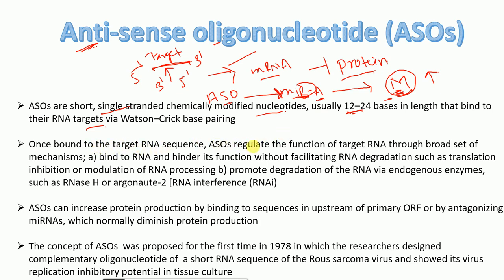Once bound to the target RNA sequence, antisense oligonucleotides regulate the function of the target RNA through a broad set of mechanisms: they can bind to RNA and hinder its function without facilitating RNA degradation, such as translation inhibition or modulation of RNA processing, or they can promote degradation of RNA via endogenous enzymes such as RNase H or RNA interference.